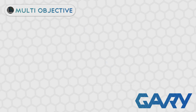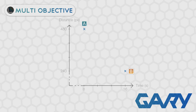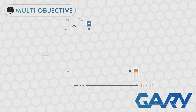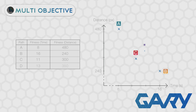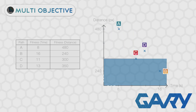Clearly, using the approach of adding the two fitness values together is not going to cut it. What would be great is if we could judge the fitness of individuals on each objective separately. A good way to visualize this is on a graph, with distance on one axis and time on the other. Let's add a couple more solutions onto the map. Looking at individual C first — it has a path that took 11 seconds with a total distance of 300. C has a better time than B but worse than A, and a better distance than A but worse than B.